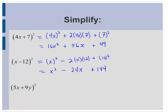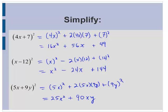5x plus 9y squared would be 5x squared. So that's 25x squared plus 2 by 5x by 9y. 5x times 9y is 45xy times 2 is 90xy. And then plus 9y squared, 81y squared.